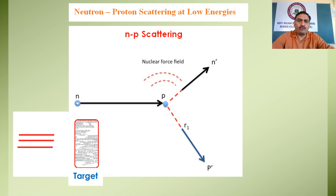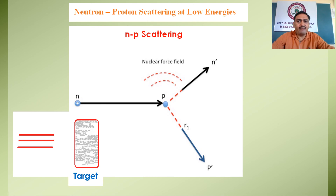In the scattering process, the outgoing particle may have the same energy as the incident particle, or there may be a change in their energy values. The former is known as elastic scattering and the latter as inelastic scattering. The second possibility is that the outgoing particles are different from the incident particles; in that case, the interaction process is known as a nuclear reaction. In nuclear reactions, we have alternatives such as radiative capture, gamma ray emission, etc. It has been observed that radiative capture has low probability, so the most probable outcome is scattering.